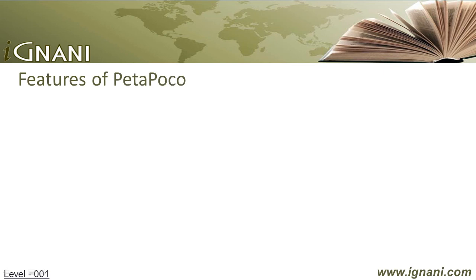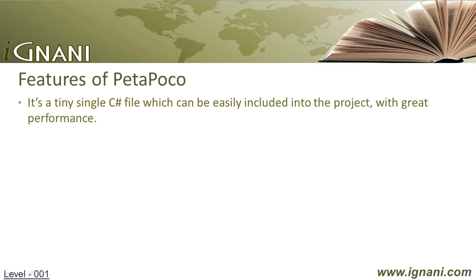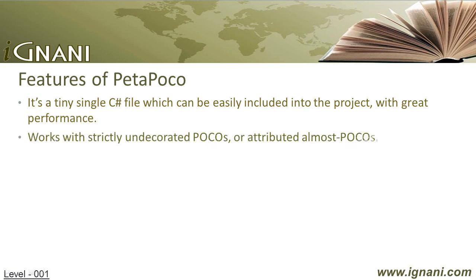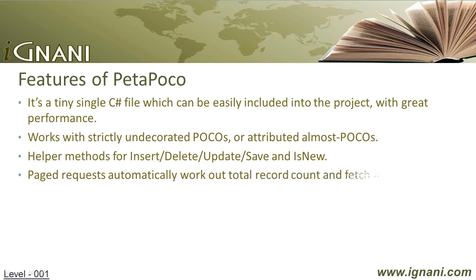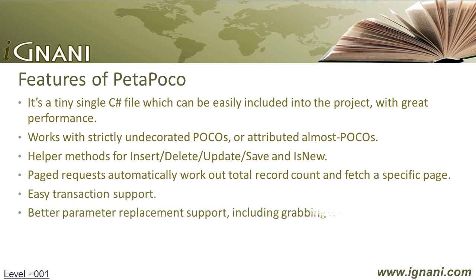Features of PetaPoco: It's a tiny single C# file which can be easily included into the project, and returns great performance by eliminating LINQ and fast property assignment with dynamic method generation. Works with strictly undecorated POCOs or attributed almost POCOs. Helper methods for insert, delete, update, and save. Paged requests automatically work out total record count and fetch a specific page. Easy transaction support. Better parameter replacement support, including grabbing named parameters from object properties.